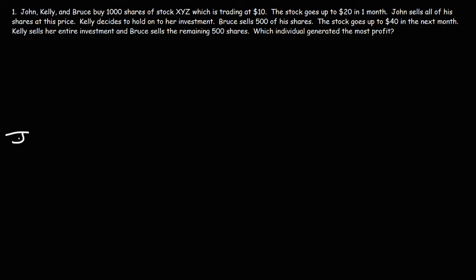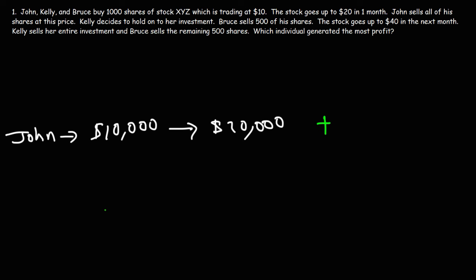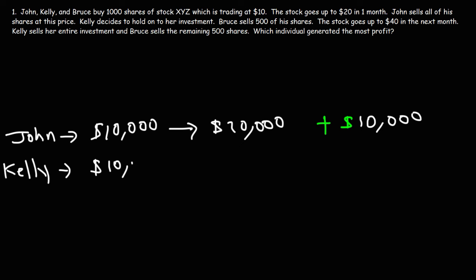Let's do the math, starting with John. He bought 1,000 shares at $10, so his initial investment is $10,000. The stock goes up to $20, and he sells all of his shares — 1,000 times $20 — for $20,000. So John has a net gain of $10,000 from this trade. Now Kelly — she holds on to her investment and sells when the price goes up to $40. She has the same initial investment of $10,000, bought 1,000 shares at $10, and sold for $40,000. So the gain she made is $30,000.